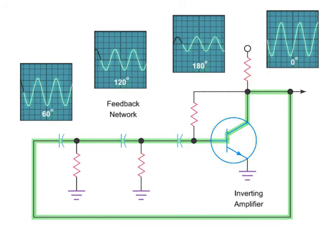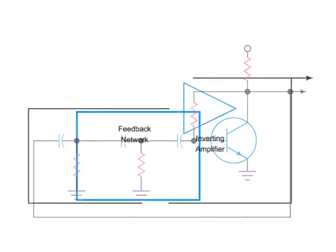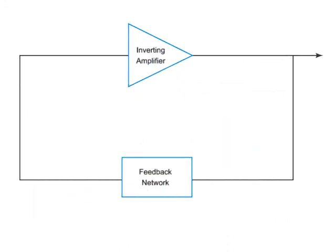In order for the oscillator to produce a repetitive oscillating electrical signal, it must follow two criteria. The circuit must have a loop gain that is greater than 1 and it must maintain its phase state.